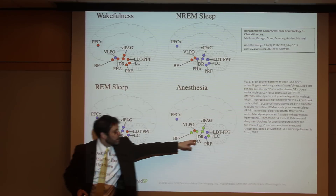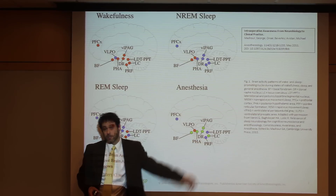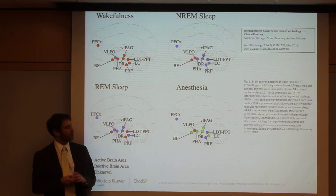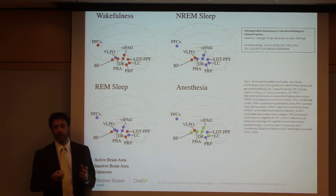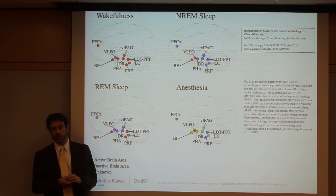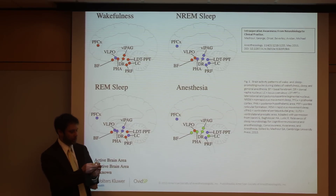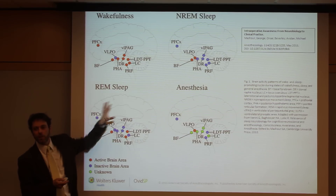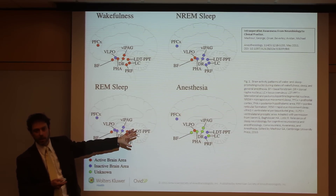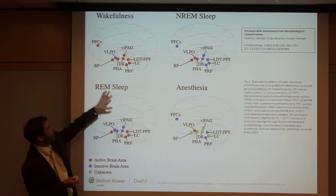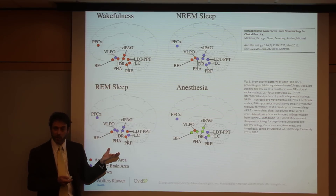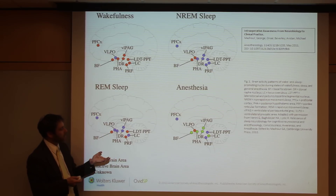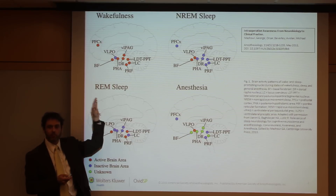Many of the other nuclei which are inactive in non-REM sleep and active in wakefulness — we're not sure how they are affected by general anesthesia. Although, for example, the locus coeruleus, which is norepinephrine-producing, is probably inhibited by alpha-2 adrenergic agents like dexmedetomidine. So this gives a sense of the nuclei that are integrally involved in arousal, sleep, and probably general anesthesia — most of them are subcortical.